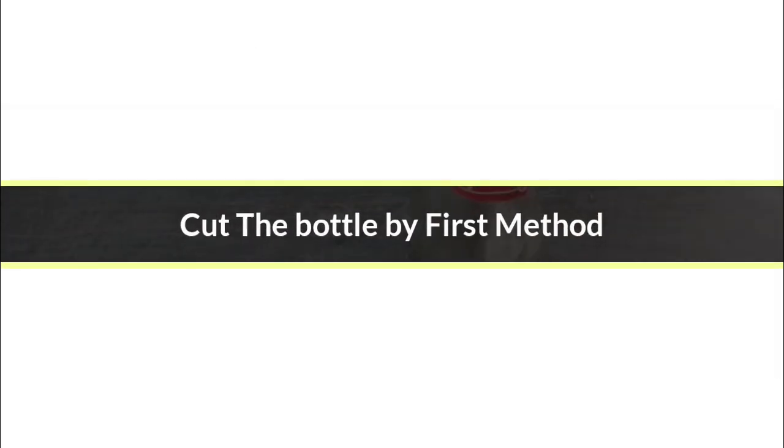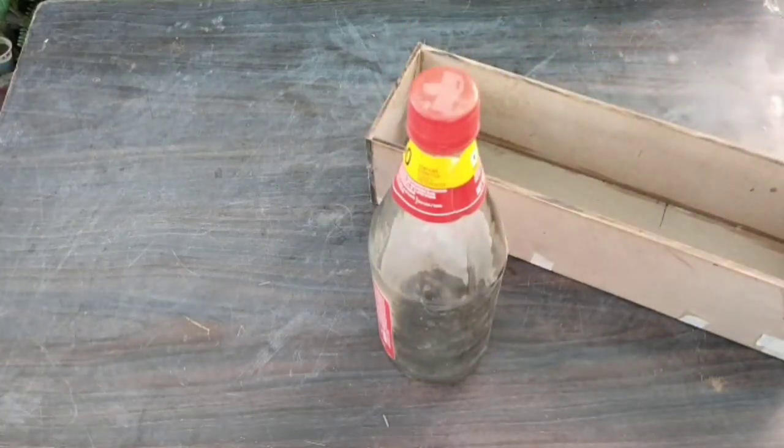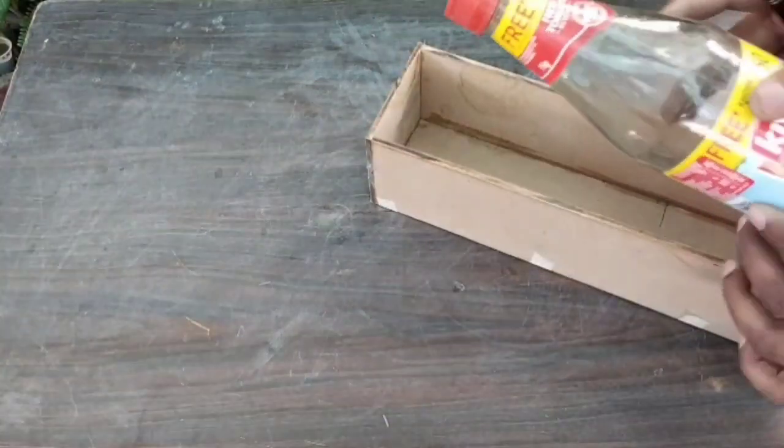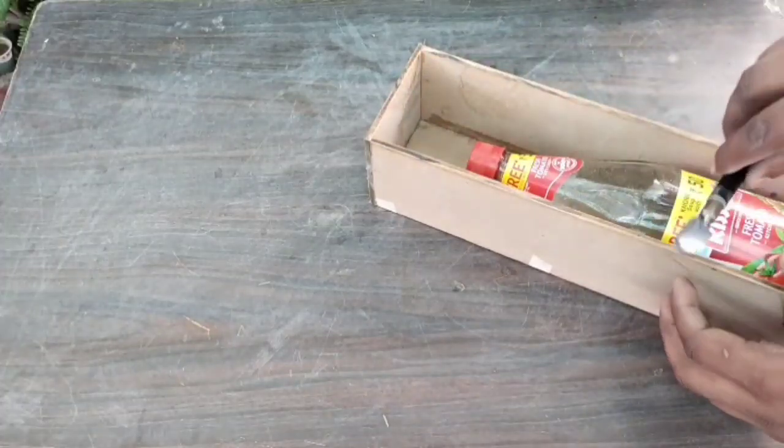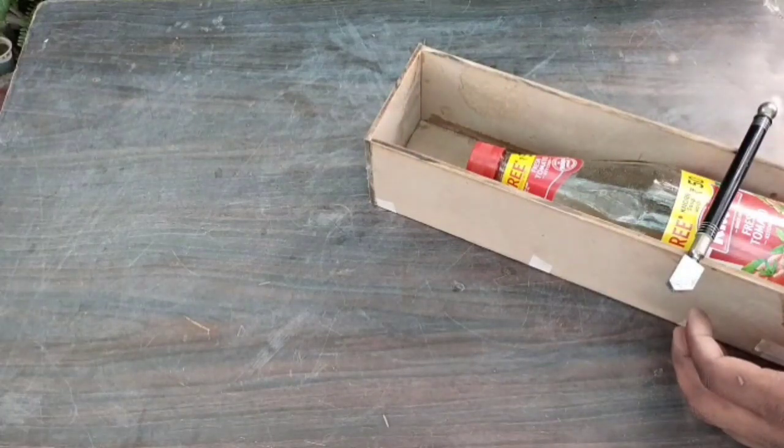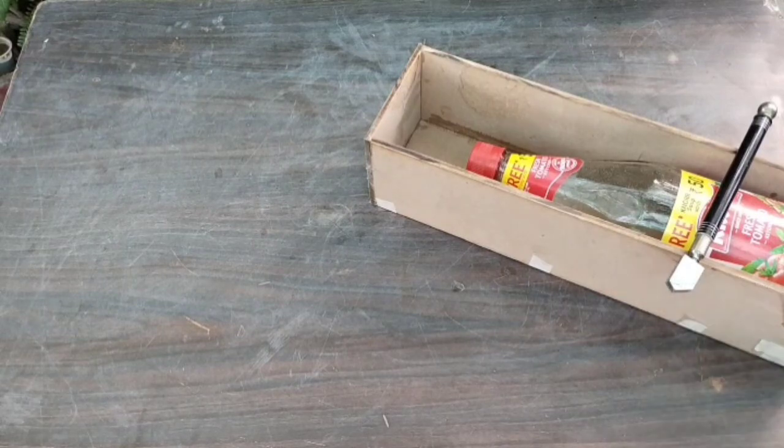Here we will cut the empty bottle of tomato ketchup. Apart from the bottle, we need a box in which we will place the bottle and mark it. We will need a glass cutter, water, candle, and matches.